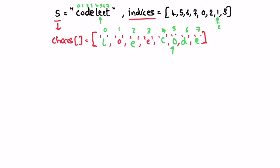i is pointing at 1 and the next character is 'e' again, so we replace the first character with 'e'. Now i is pointing at 3, and the next character is 't', so we replace the character at index 3 with 't'. In the next iteration i reaches the end of the indices array, so we end the iteration and we now have our output inside the character array.